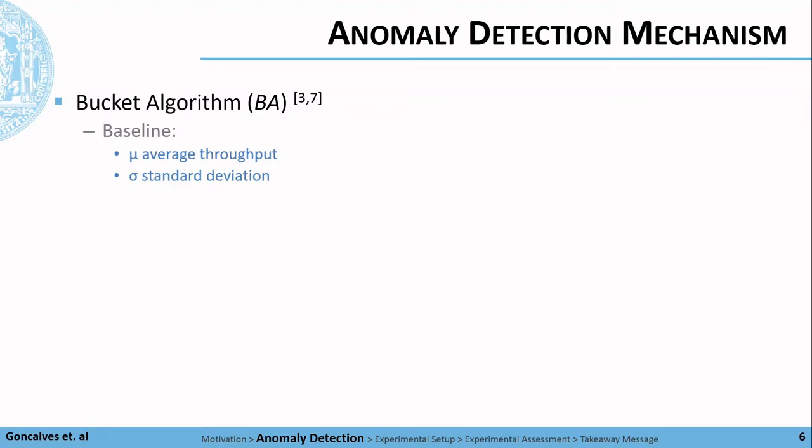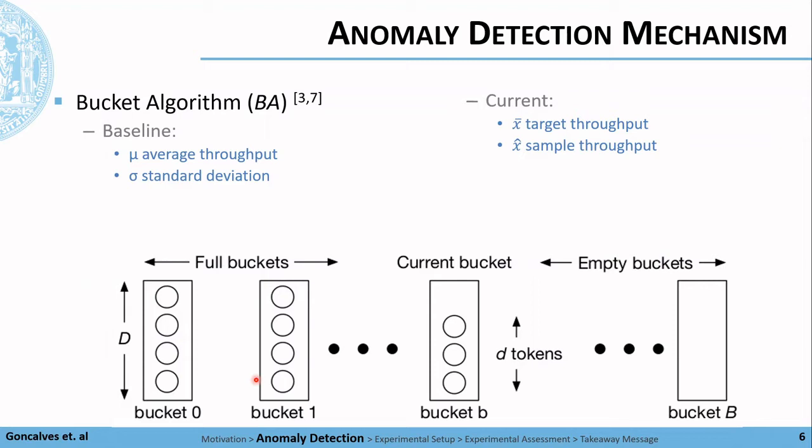But how does the workload variability assessment work? As said before, we have a baseline average throughput and its standard deviation. The bucket algorithm works by continually comparing the target throughputs with the current sample throughputs, maintaining buckets of depth d each. The algorithms are tuned by varying the bucket depth and the number of buckets. The larger the product d times b, the smaller the rate of false alarms, but the longer it takes for the algorithm to detect the performance degradation.